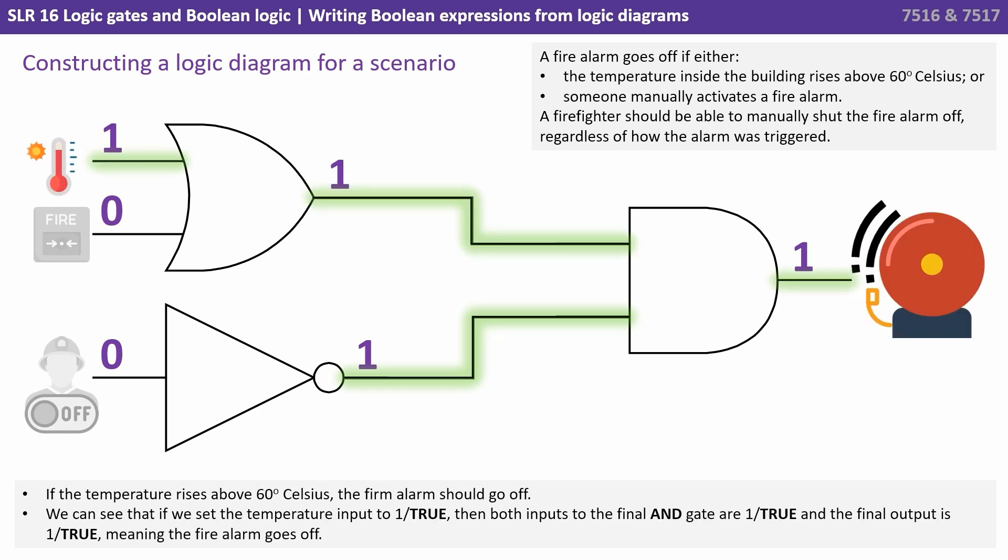So what if the temperature rises above 60 degrees Celsius? The fire alarm should go off and we can see that if we set the temperature input to one or true, then both inputs to the final AND gate are true and the final output is one or true, meaning the alarm will go off. So far so good.